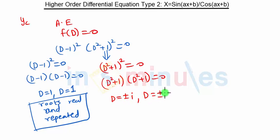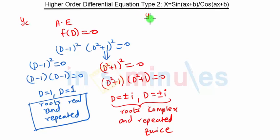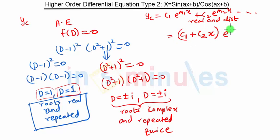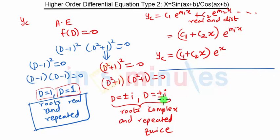For real distinct roots, yc = c1·e^(m1·x) + c2·e^(m2·x), and so on. But since the roots are repeated, D = 1 is repeated twice, so the expression becomes (c1 + c2·x)·e^(m1·x), where m1 = 1. So the yc for the real repeated root part is (c1 + c2·x)·e^x.